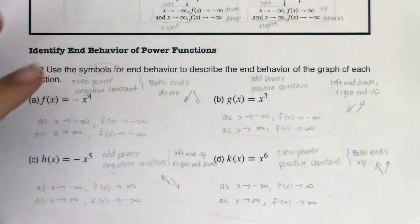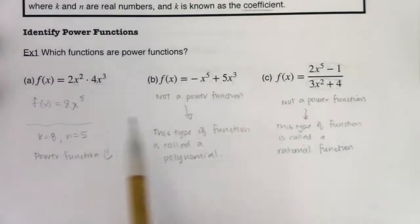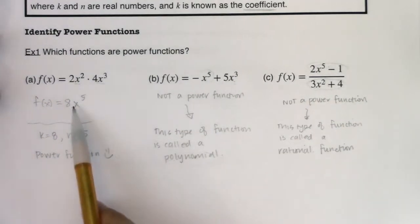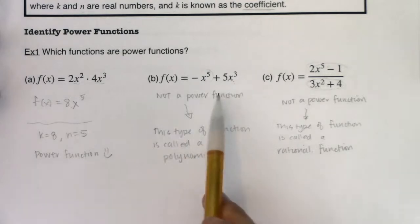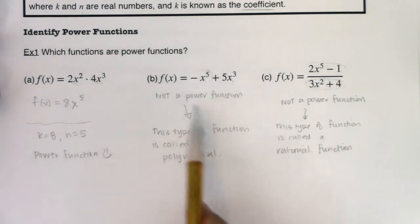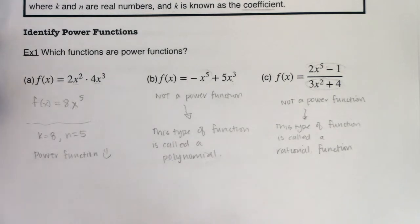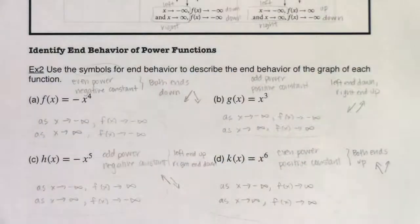We've talked about power functions. In example three, we're going to start talking about the end behavior for a polynomial — what happens when you add and subtract power functions together. We'll flip the page and continue.